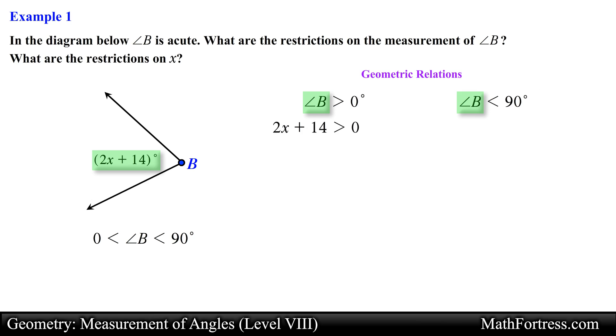So our first inequality would be 2x plus 14 is greater than 0, and the second inequality would be 2x plus 14 is less than 90. These inequalities were obtained by using the definition of acute angles.